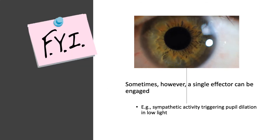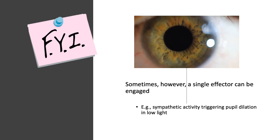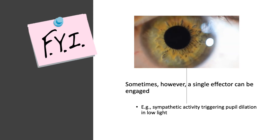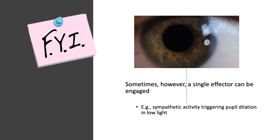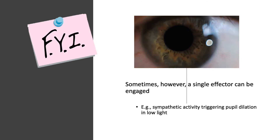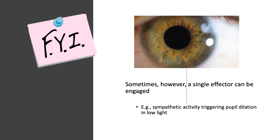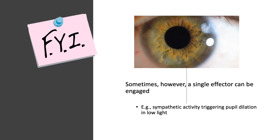Not all sympathetic responses involve mass activation. There are times when the sympathetic division activates just a single effector — for example, when it stimulates smooth muscle to increase the diameter of the pupil of the eye in low light conditions.